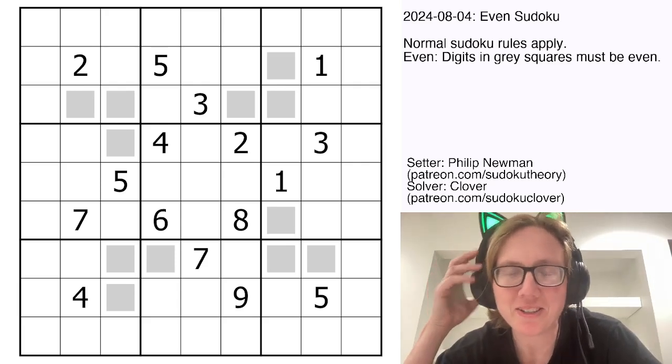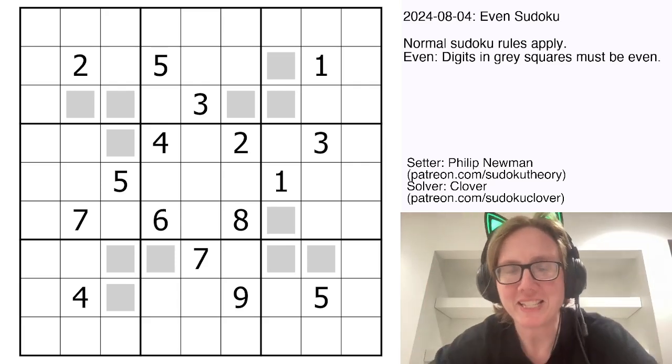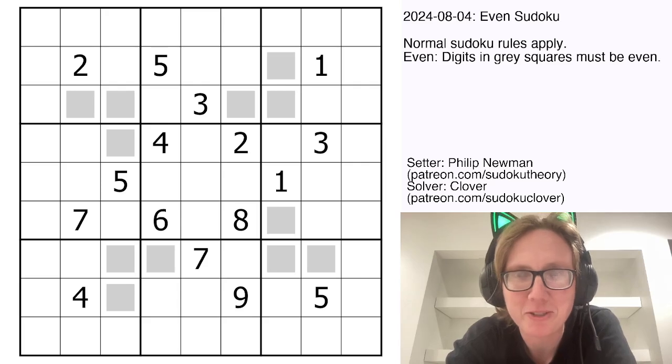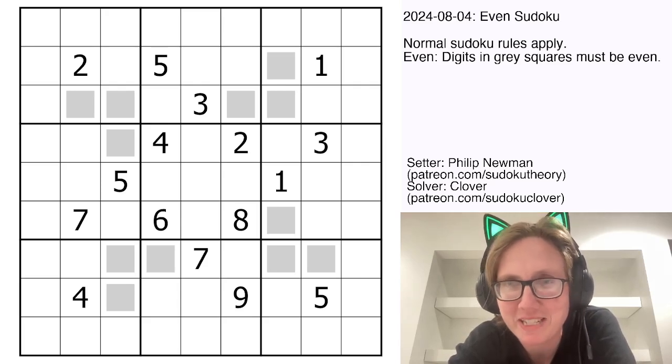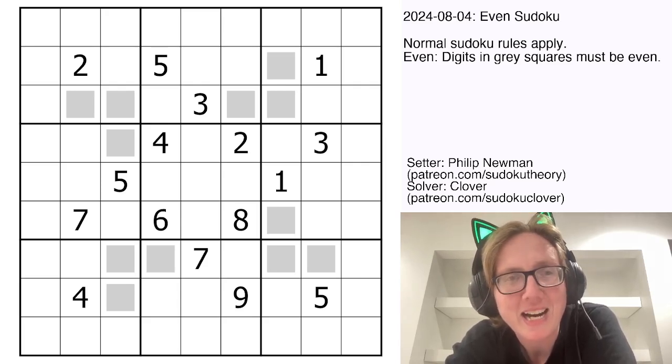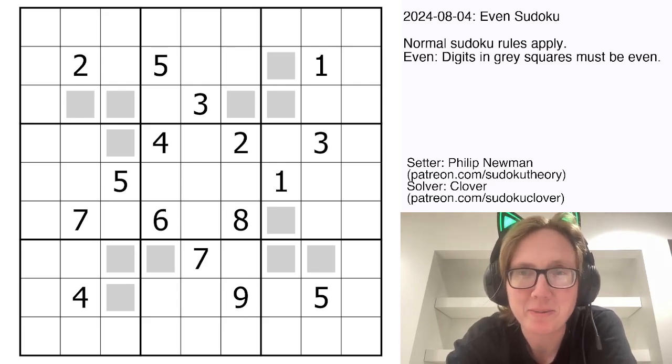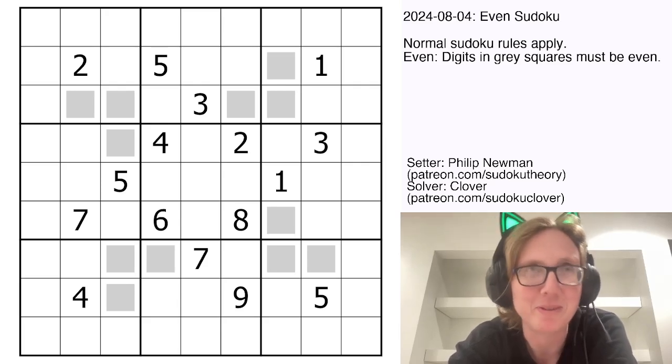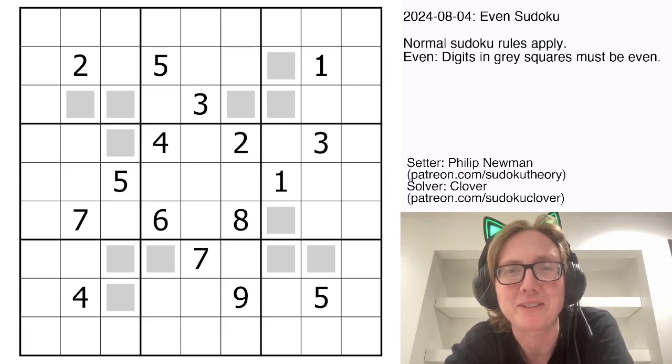This is part of our August month-long guessing game, where every day in August you have the opportunity to guess what the following day's puzzle is going to be. They always follow some kind of pattern. The first year that we did this, the puzzles were all in alphabetical order. We worked our way through the whole alphabet using variants starting with different letters.